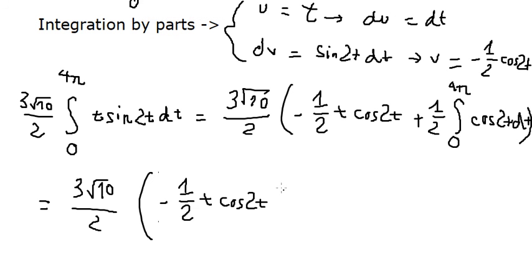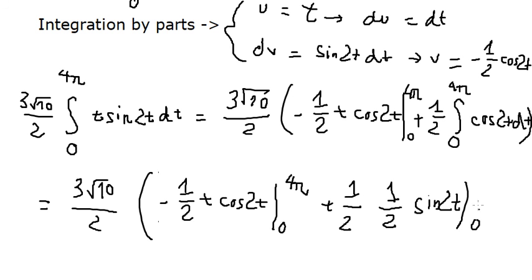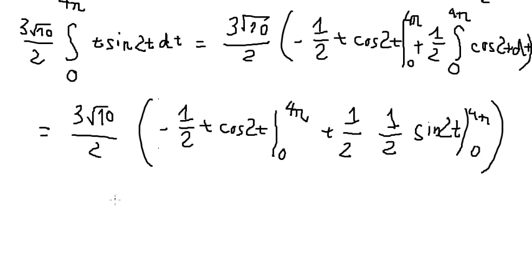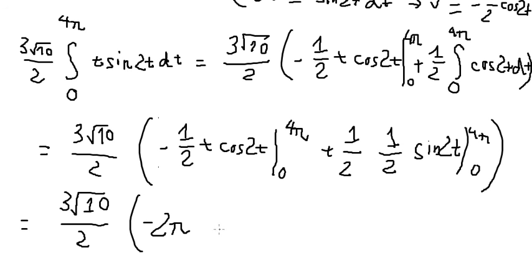This one we have the boundary from 0 to 4 pi. The integral of cosine 2t, we get 1 over 2 sine 2t, and we have the boundaries in here. So we put 4 pi in here, we get number 0 in here, and we get negative 2 pi. And this one you get 0.